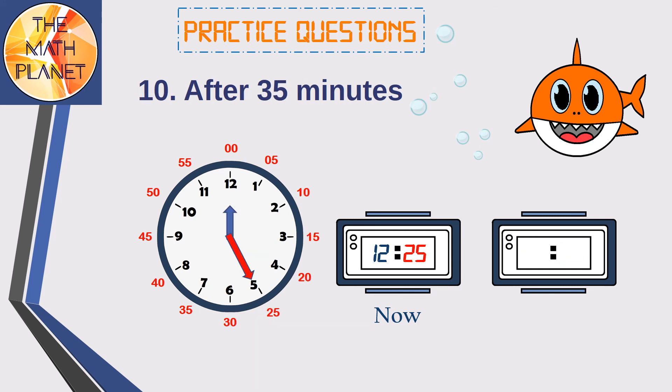Question 10. What time will it be after 35 minutes from now? Now it's 12:25, so let's add 35 minutes, plus 5, 10, 15, 20, 25, 30, and 35. So, in 35 minutes, we will move to the next hour, so it will be 1 sharp.